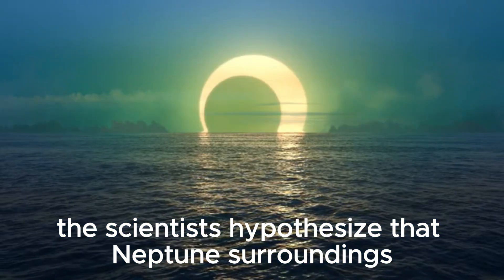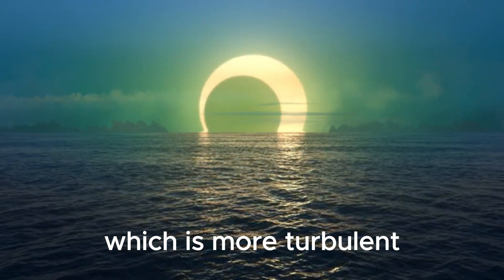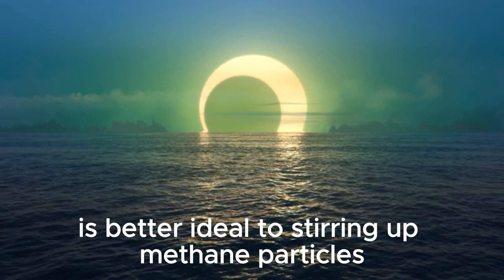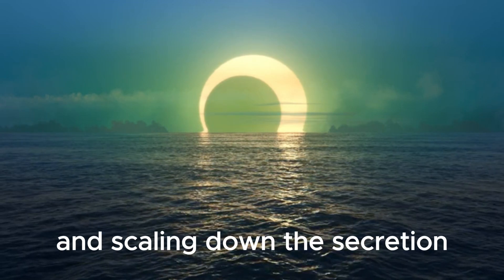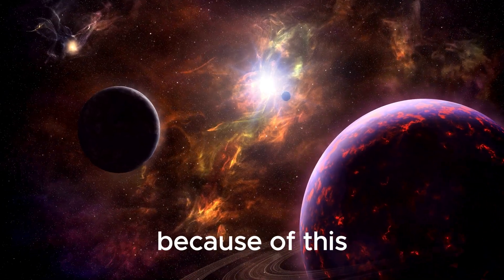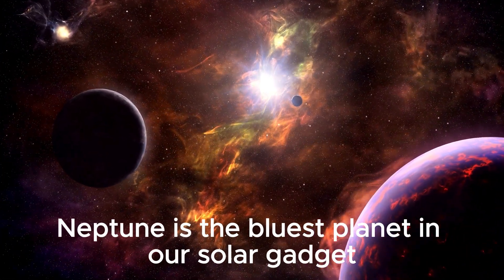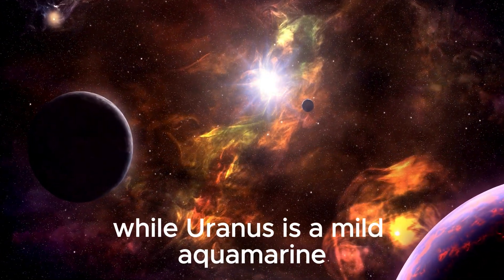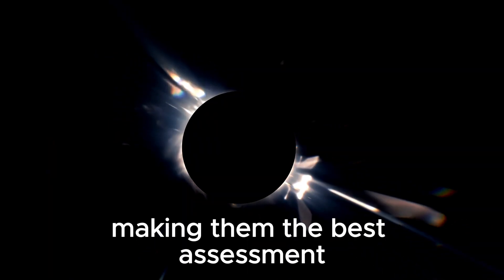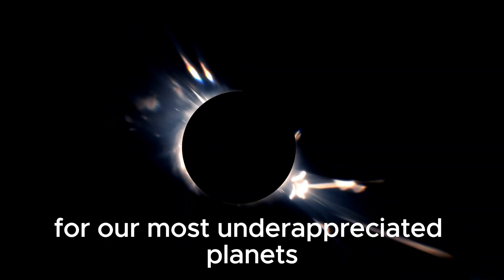The scientists hypothesize that Neptune's surroundings, which is more turbulent, is better ideal to stirring up methane particles and scaling down this accretion. Because of this, Neptune is the bluest planet in our solar gadget, while Uranus is a mild aquamarine, making them the best assessment for our most underappreciated planets.